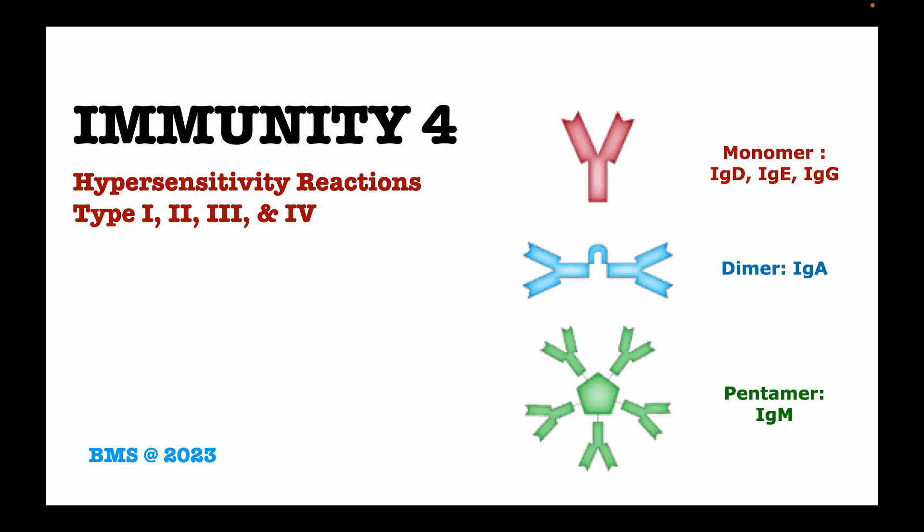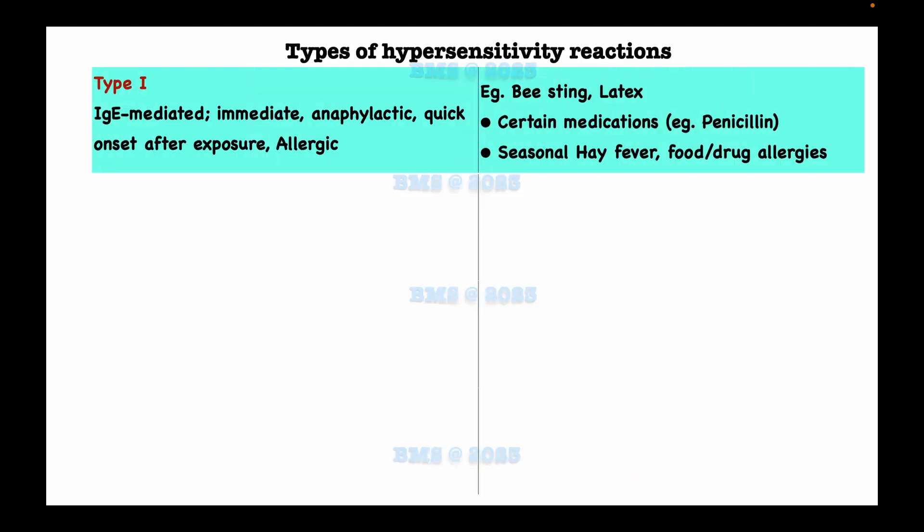Today we are going to look at hypersensitivity reactions, type 1 to type 4. The first one is type 1 hypersensitivity reaction, which is mediated by immunoglobulin E and the response is immediate — quick after the onset of exposure.